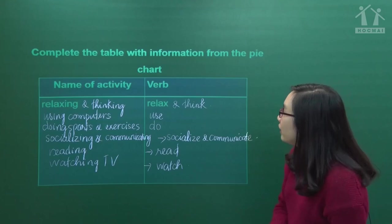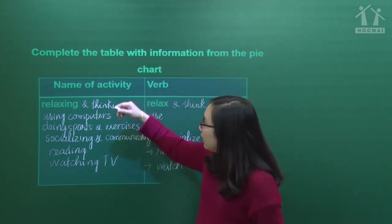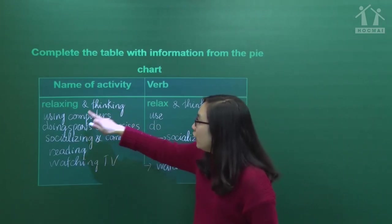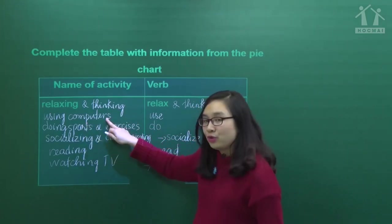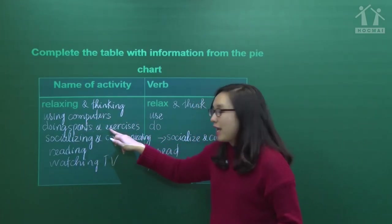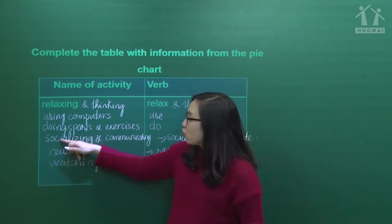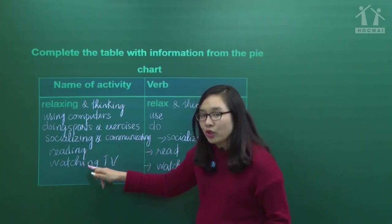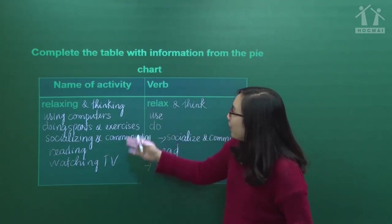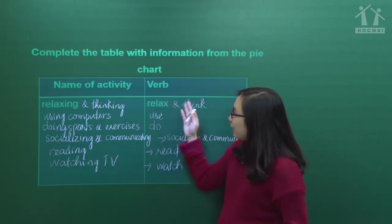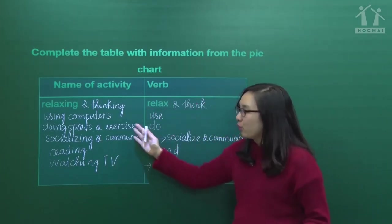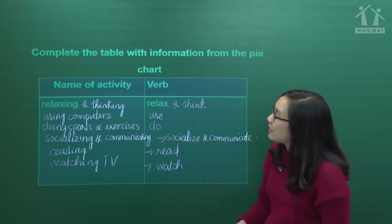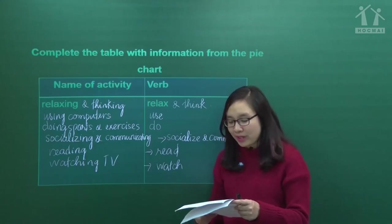Vậy chúng ta đã cùng liệt kê được 6 hoạt động: relaxing and thinking, using computers, doing sports and exercise, socializing and communicating, reading, and watching TV. Tương ứng với các hoạt động này, chúng ta đã cùng tìm ra các động từ nguyên thể. Bây giờ chúng ta sẽ chuyển sang bài tập số 3.